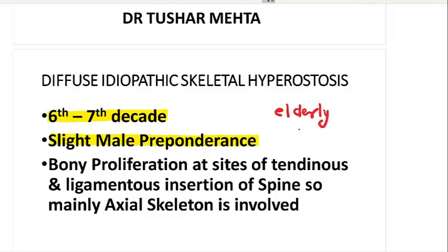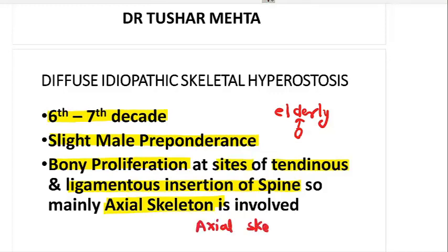The keyword that we get here is elderly males are more commonly involved. What technically occurs in this problem is that there is a bony proliferation at the sites of tendinous and ligamentous insertion of the spine. So we can conclude that mainly the axial skeleton is involved — and in the axial skeleton, the spine is the common site.